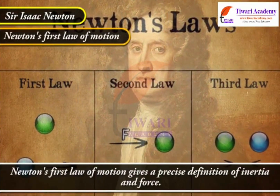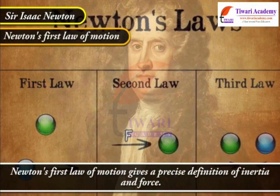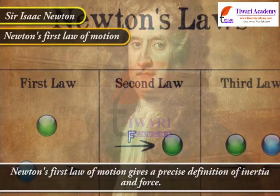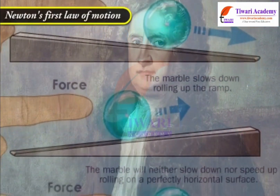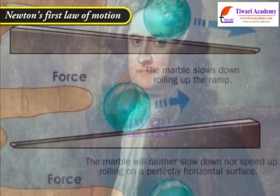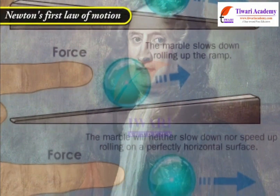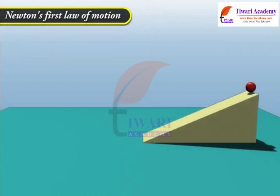Newton's First Law of Motion gives a precise definition of inertia and force. It states that everybody continues to be in its state of rest or of uniform motion in a straight line unless it is compelled by some external force to change that state.